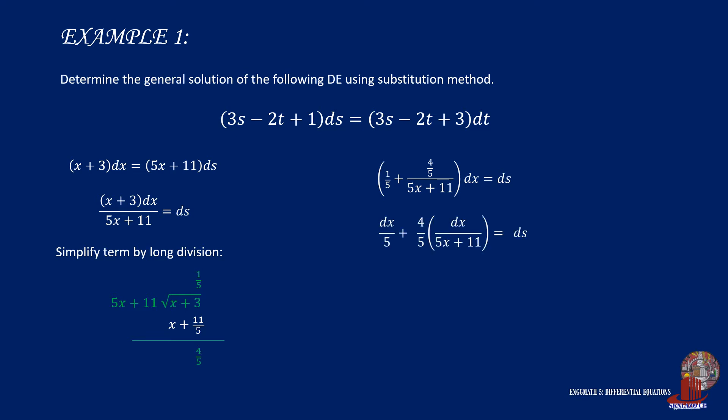Distribute dx to have dx over 5 plus 4 fifths of dx over 5x plus 11 is equal to ds. With derivatives separated, we can integrate them and we get x over 5 plus 4 fifths of ln of 5x plus 11 times the balancing factor of 1 fifth is equal to s plus c. This simplifies as x over 5 plus 4 over 25 of ln of 5x plus 11 is equal to s plus c.